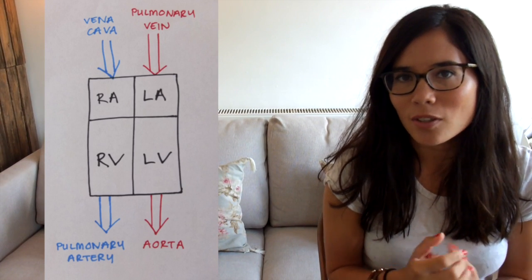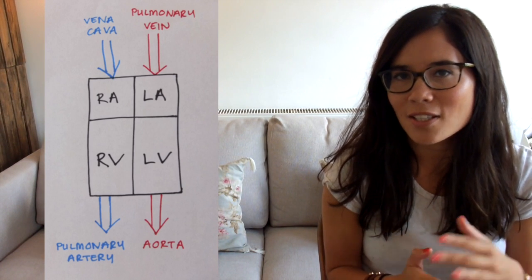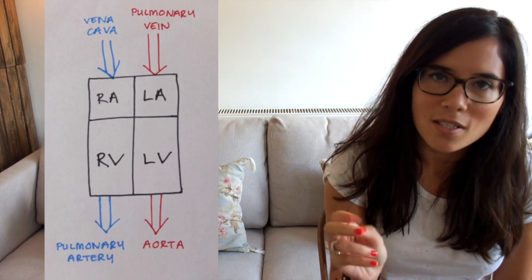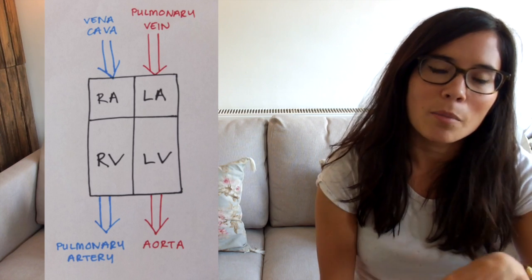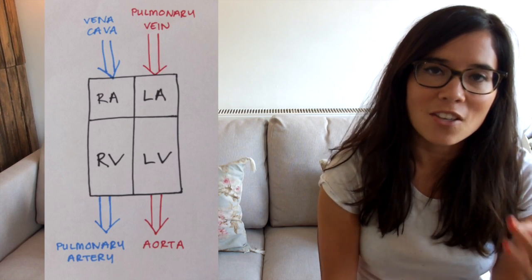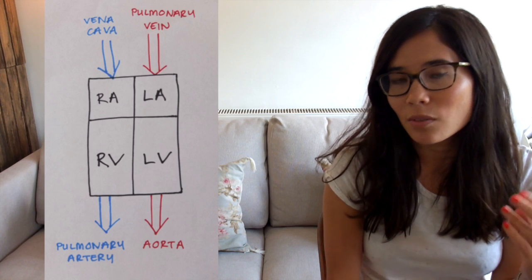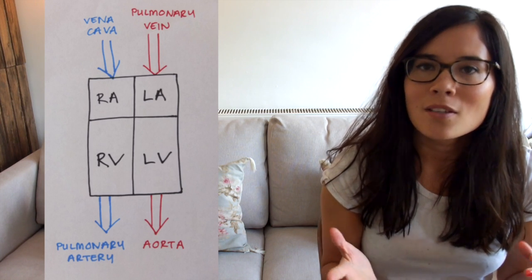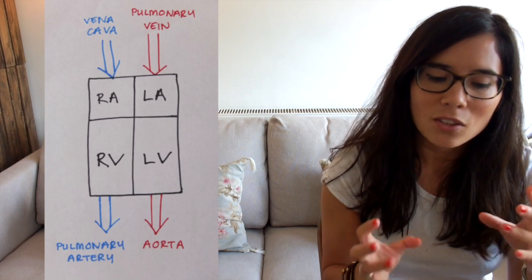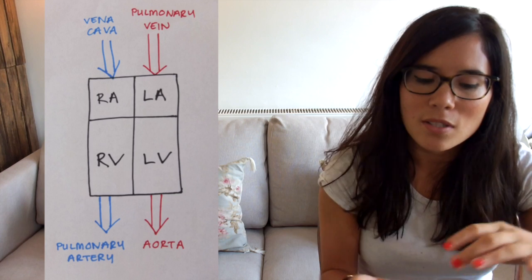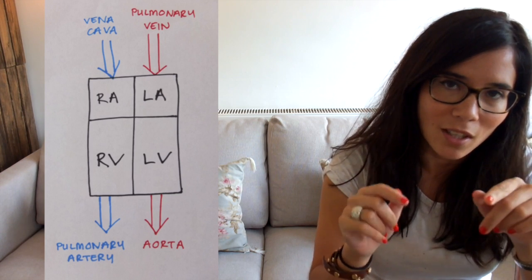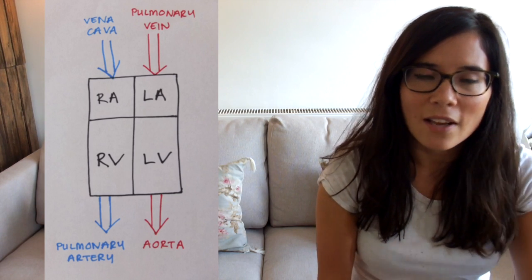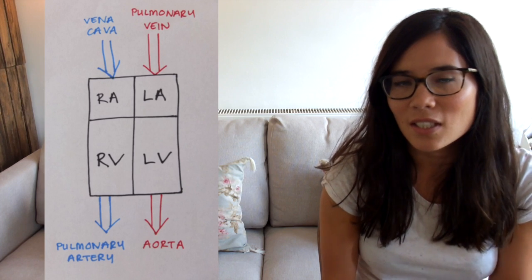So if we draw a box and we divide it into four, make sure the top two portions are smaller than the bottom two, because the atrium - the atria, which is plural - are smaller than the ventricles. If you divide your heart into a box, the top two compartments are the atria, the left and right.